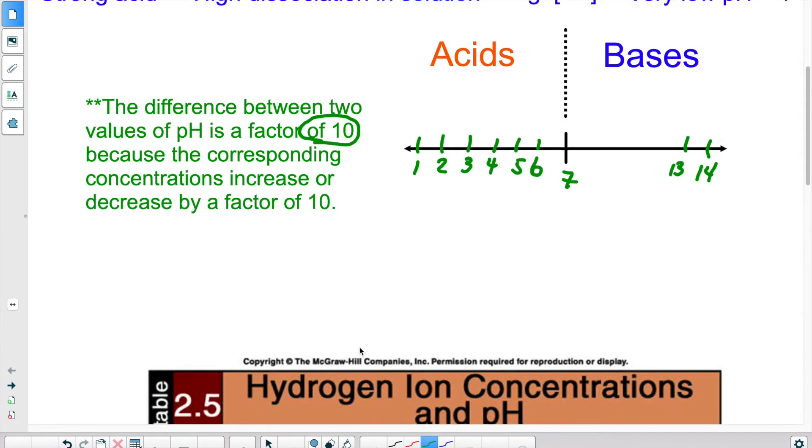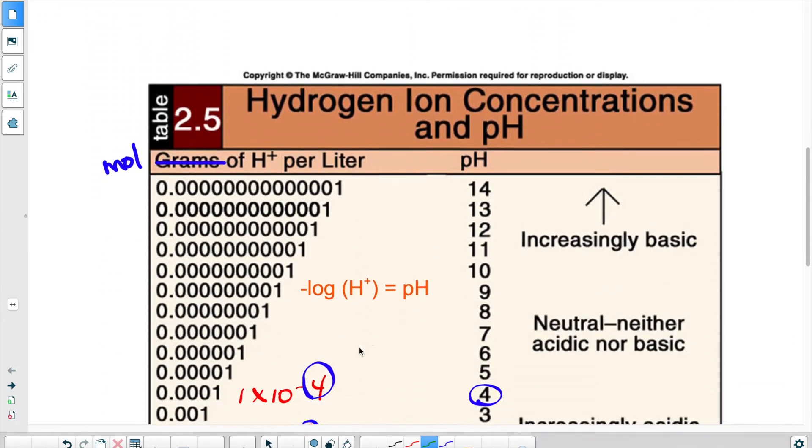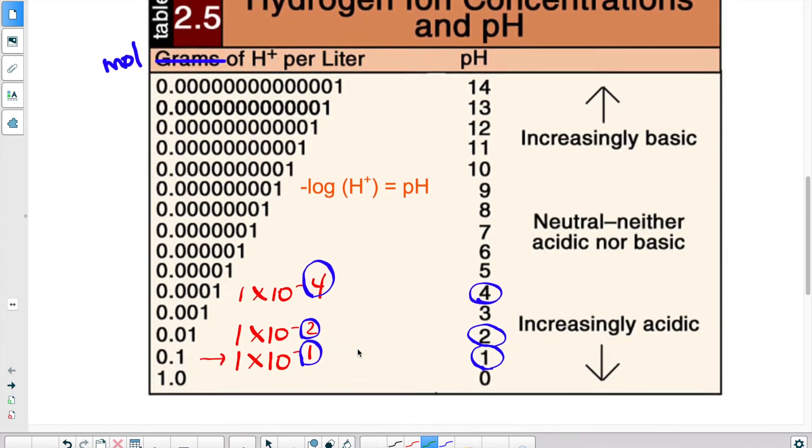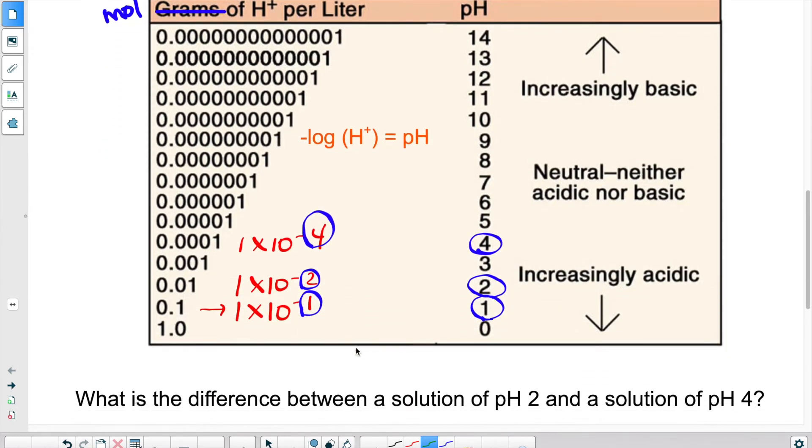Now where do these numbers come from? Well, essentially it comes from the concentration. So if you look over here at this chart, as an example, if you have a concentration of H plus ions of 0.001, we could transform this in scientific notation and say it's 1 times 10 to the negative 4. Well, the exponent, the 4 here, corresponds to a pH of 4.